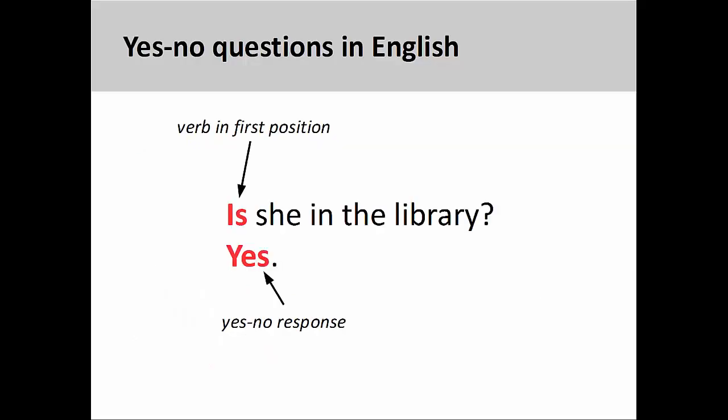As you see here, English yes-no questions are characterized by the conjugated verb being placed in the first position, or at the very beginning of a sentence. Yes-no questions are so called because they do not demand a detailed response in the manner that interrogative words do. The simple yes or no suffices.